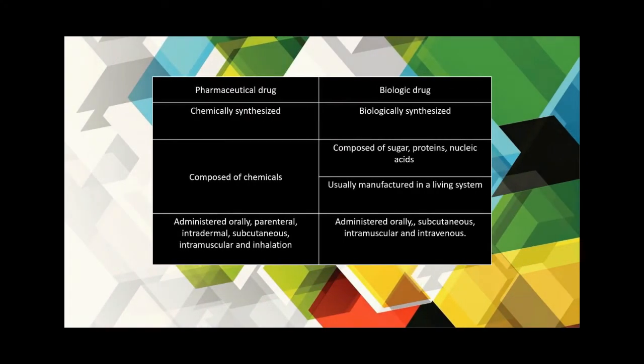To understand biopharmaceuticals, let's first differentiate between a pharma drug and a biopharma or biological drug. A pharmaceutical drug is a chemically synthesized drug, whereas a biological drug is a drug derived from a biological source and is mainly composed of sugars, proteins, nucleic acids, and may include living entities such as cells and tissues.